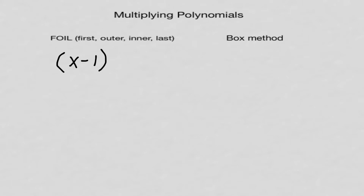The problem is (x - 1)(x + 2). I'm going to do it both ways. The FOIL method stands for First, Outer, Inner, Last. The 'First' means you multiply the first item in each parenthesis — this x and this x. So x times x is x squared.